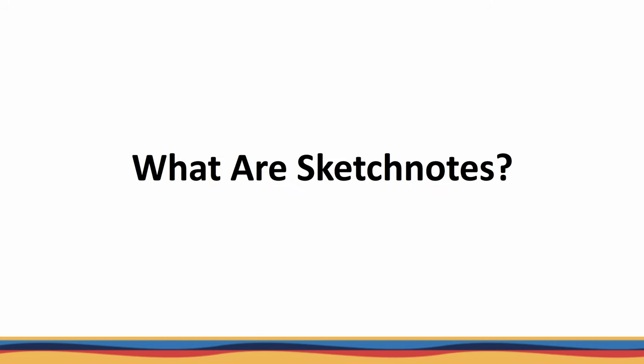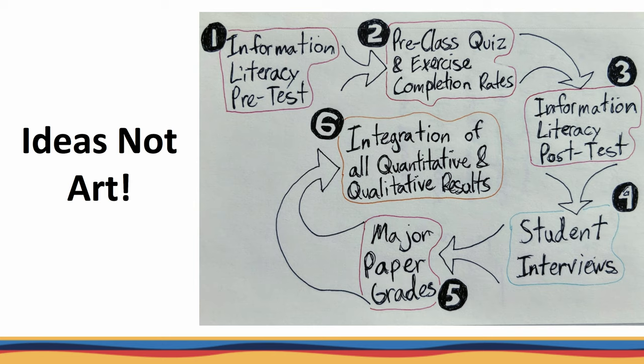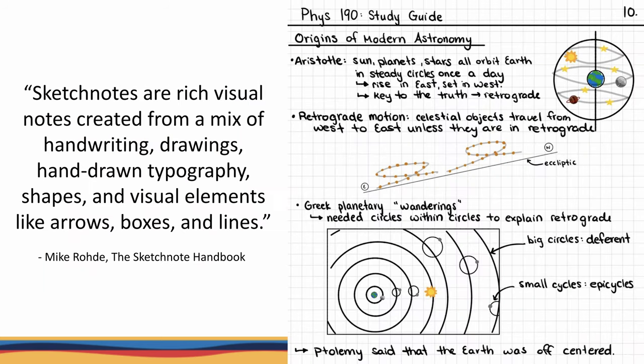So what are sketchnotes? They are ideas, not art. As you can see on the sketchnote on the screen, the only artwork really was arrows and bubbles around the text — I didn't even get a stick figure in. As you can see from this example from a UVic student from their Physics 190 class, sketchnotes are a mix of handwriting, drawings, shapes and visual elements like arrows, boxes and lines.